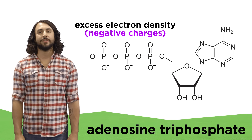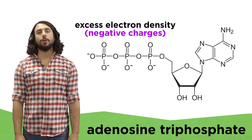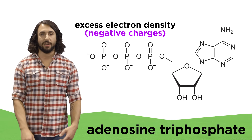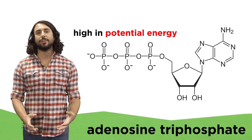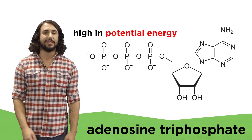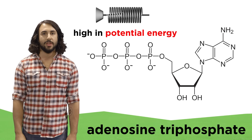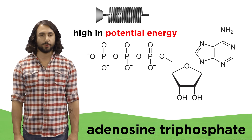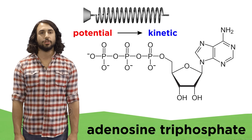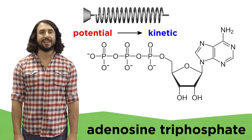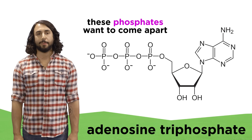There is an abundance of negative charge on these phosphates, and we know that like charges repel one another. So there is a lot of potential energy stored in this part of ATP, kind of like a compressed spring. Just the way a compressed spring wants to expand, releasing the stored potential energy and converting it into kinetic energy, these phosphates want to come apart.